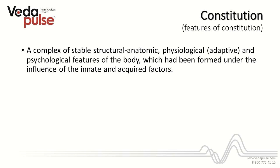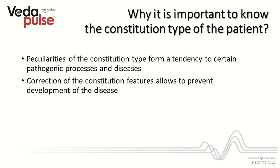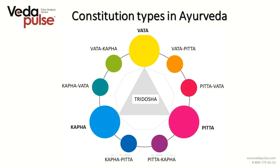Modern research in epigenetics shows that innate factors or genetics of a person may be influenced by outer changes, which gives us a huge opportunity to work on prevention of genetic diseases. Knowing the constitution type of a person allows the specialist to determine their predispositions to different diseases and start working on preventive measures and treatment. There are three regulation systems in modern medicine, identified in Ayurveda through Vata, Pitta and Kapha. There are nine constitution types based on dual combinations of doshas, plus the tenth type called Tridosh — a balance of all three doshas — present in only about 1% of the population.